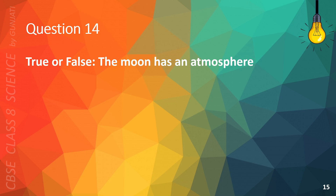Question 14. True or false? The Moon has an atmosphere. The correct answer is B. False.